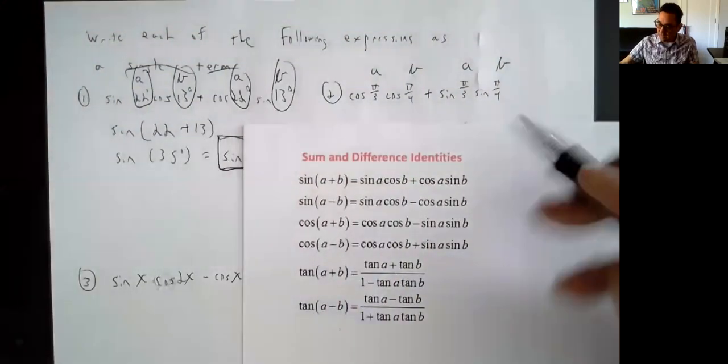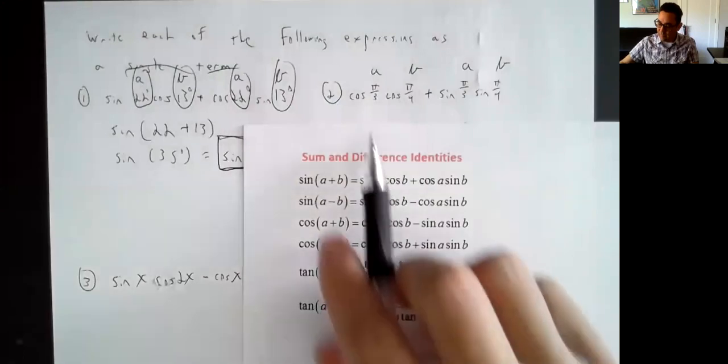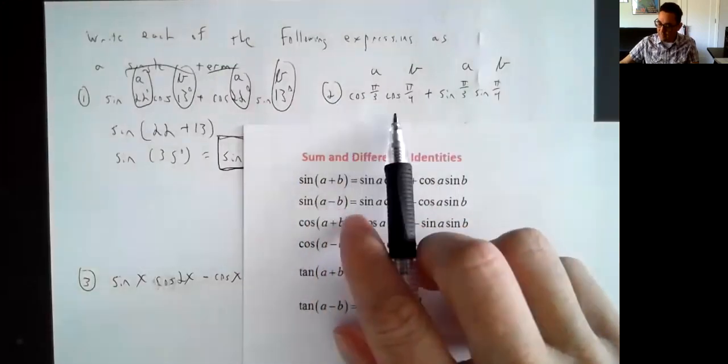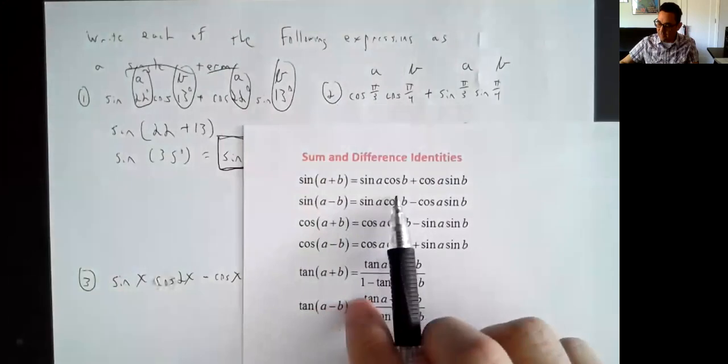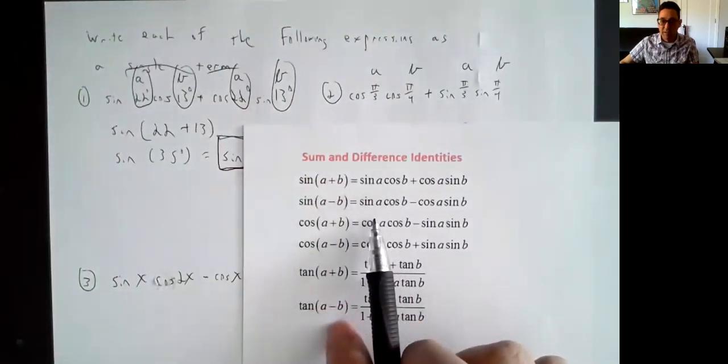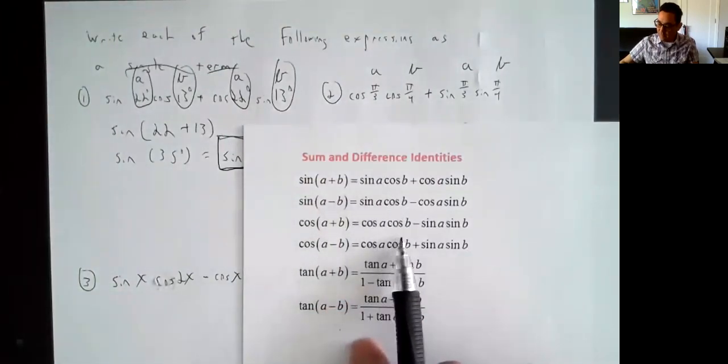If I look here, this one has sines and cosines mixed together, then they're the same: cosine, cosine, sine, sine. This has sine and cosine mixed, it's not this one. It's not the second one. This has cosine A and B times A, but it's minus and I want a plus.